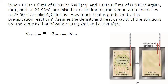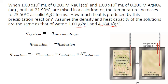When dealing with aqueous reactions, we often replace system with Q reaction and Q surroundings with Q solution. The Q solution really refers to the water in the solution, which is why we can use the density and heat capacity of water in our calculations. The full equation for the heat of the reaction is the negative of the mass of the solution times the heat capacity of the solution times the temperature change of the solution.